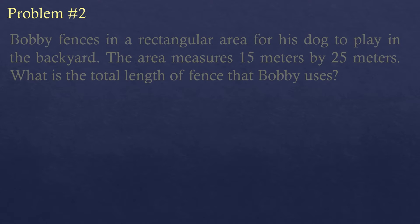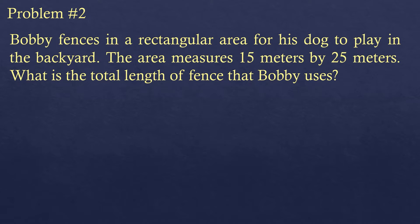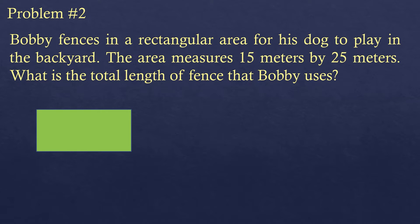Problem Number Two: Bobby fences in a rectangular area for his dog to play in the backyard. The area measures 15 meters by 25 meters. What is the total length of fence that Bobby uses? We illustrate a rectangle with a length of 25 meters and a width of 15 meters, and we need to find its perimeter.